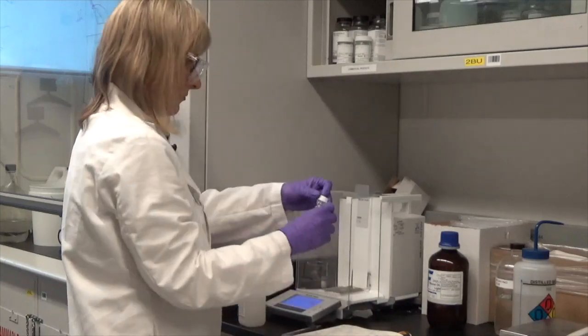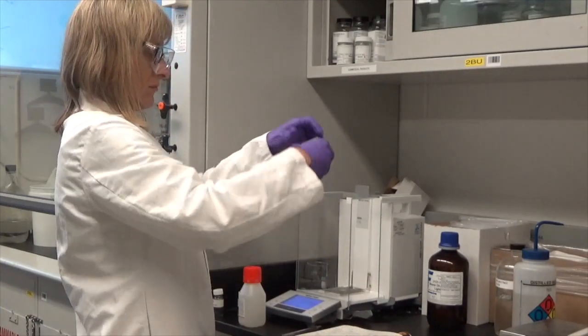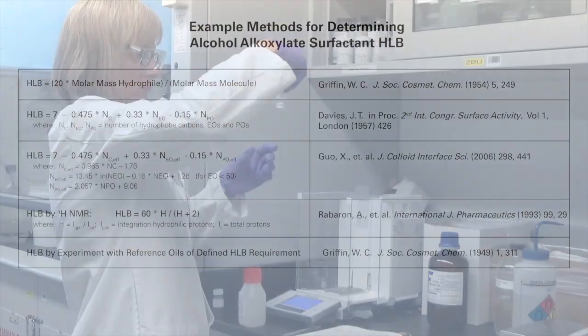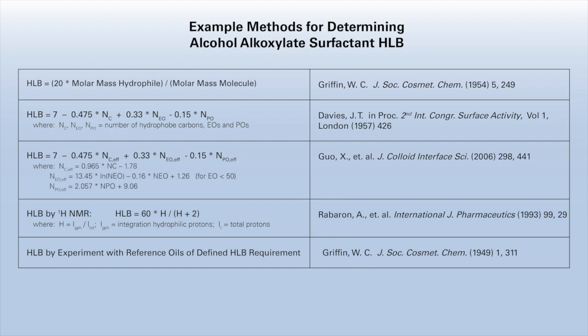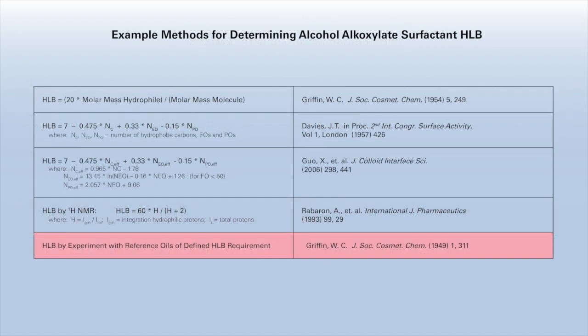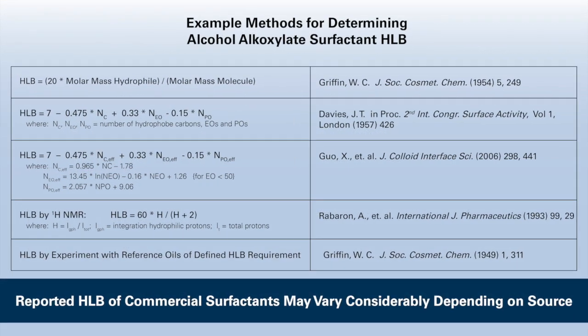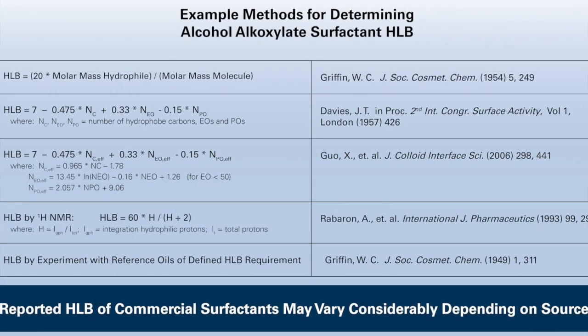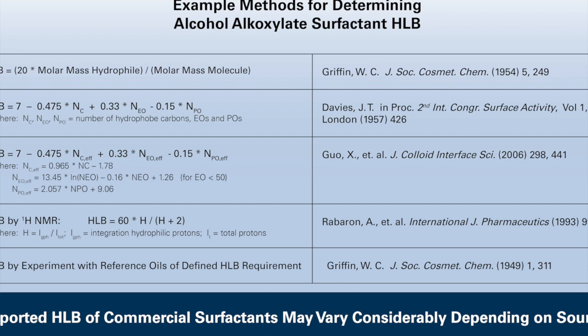In other situations, a chemist may be interested in working with surfactants of unknown HLB. There are a number of approaches for determining the HLB of a surfactant, including calculations ranging from simple to more complex, measurement of surfactant characteristics that have been correlated to HLB, and direct measurement of HLB using reference oils of known HLB requirement. Because of the diversity of approaches, reported HLB values for commercial surfactants may vary from supplier to supplier.